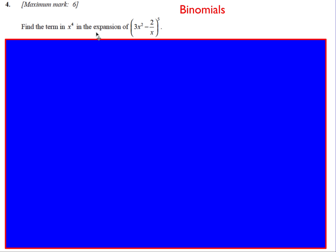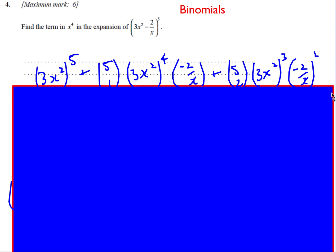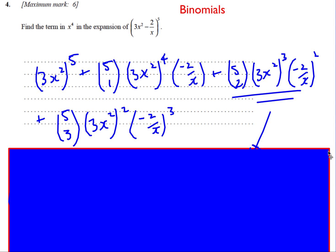First one is find the term in x^4 in the expansion 3x squared minus 2 over x to the power 5. Now, you may be able to kind of just look at this and work out which one's going to be. You may just prefer just to write out the expansion and then kind of work backwards from that.